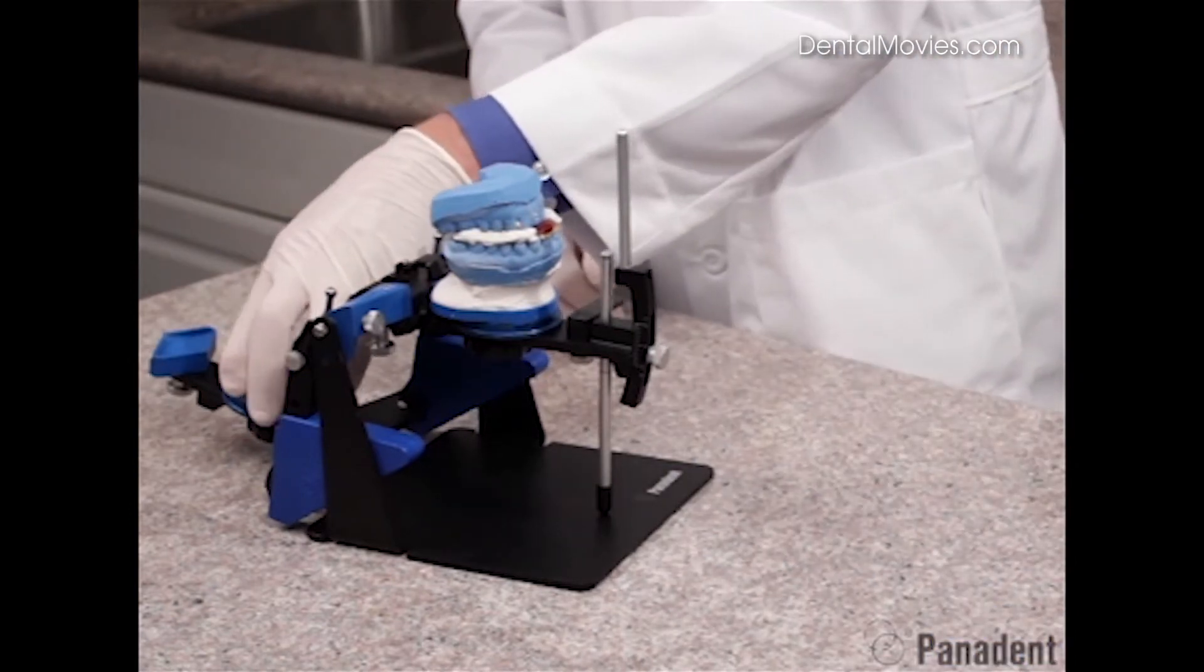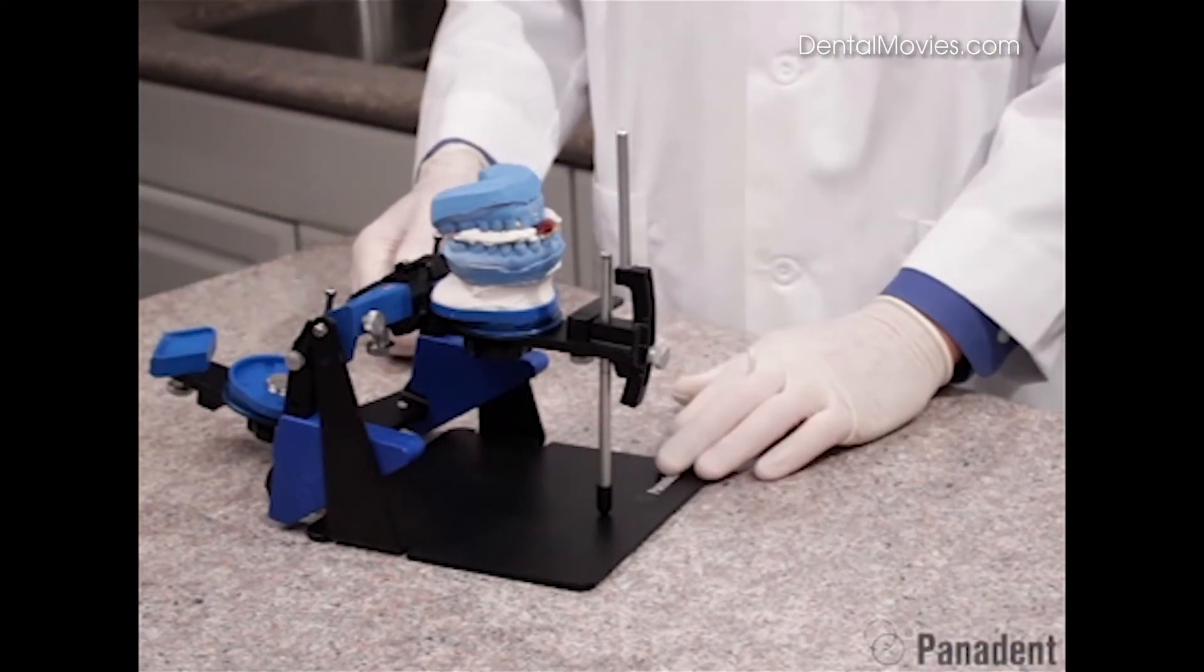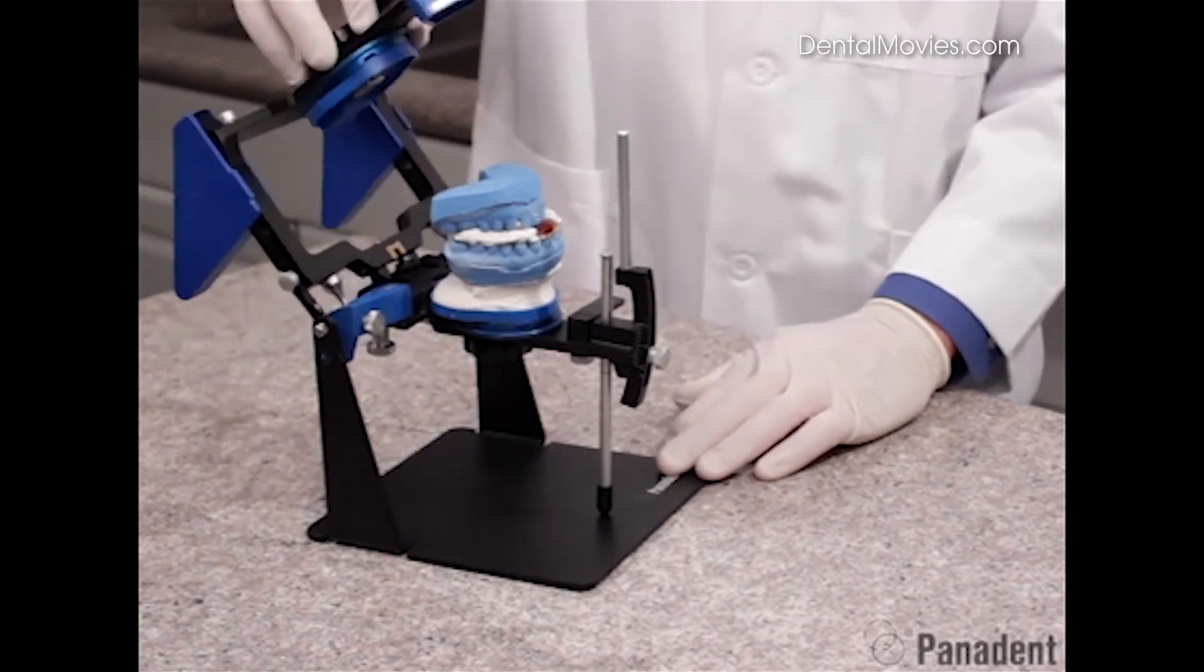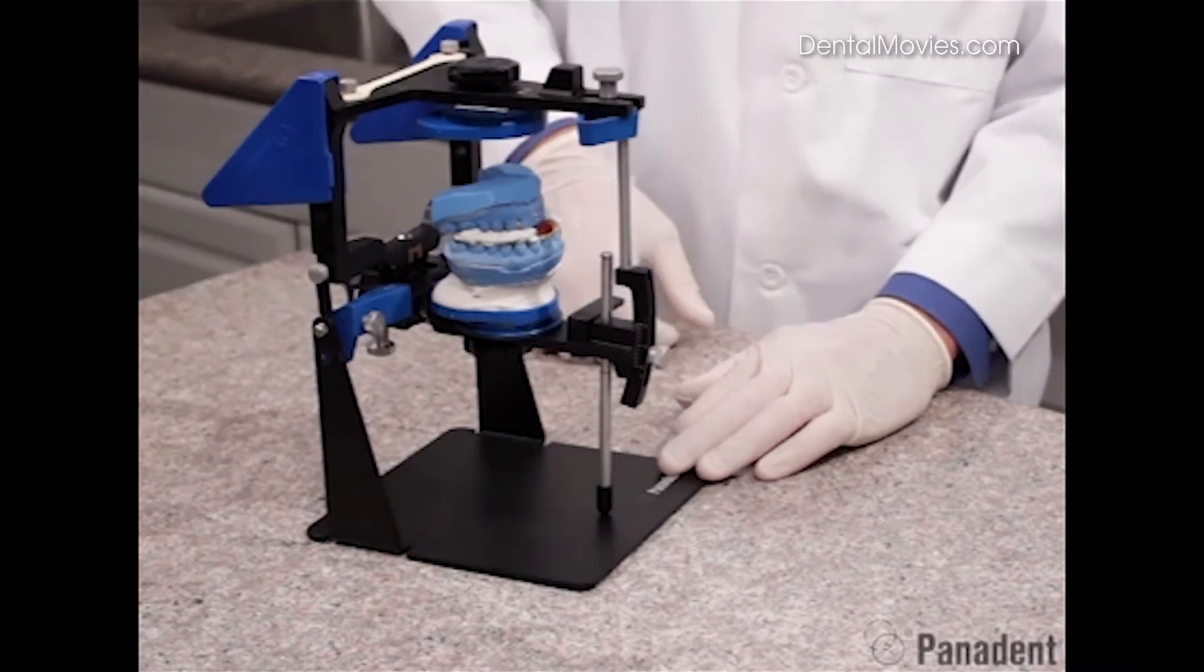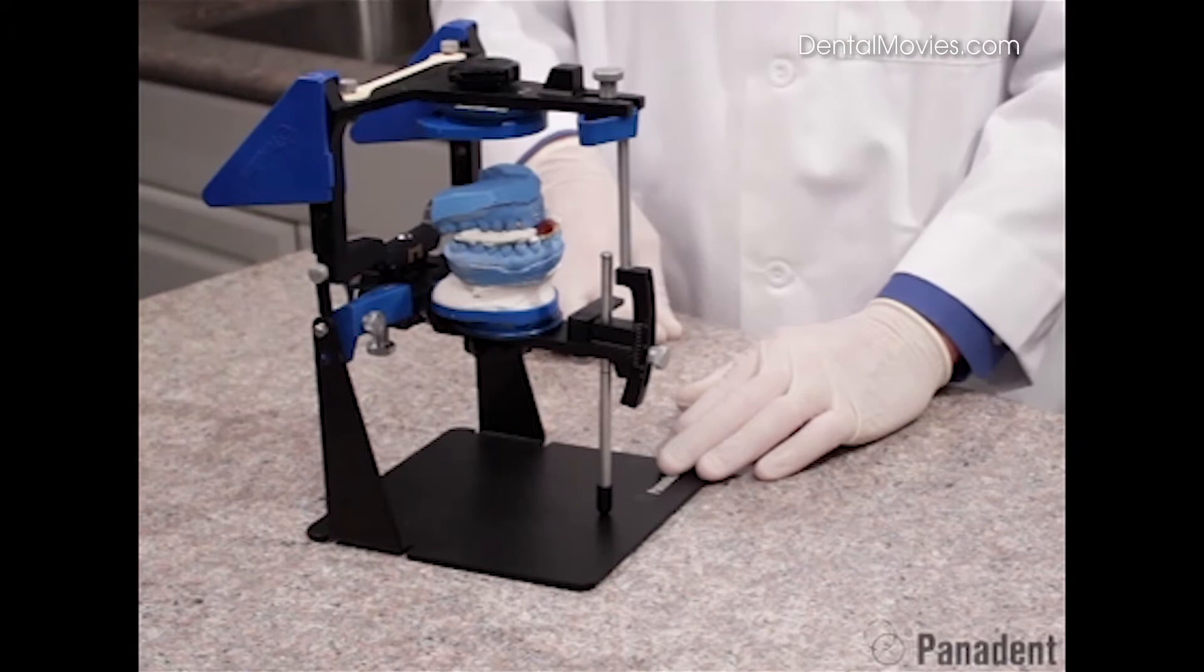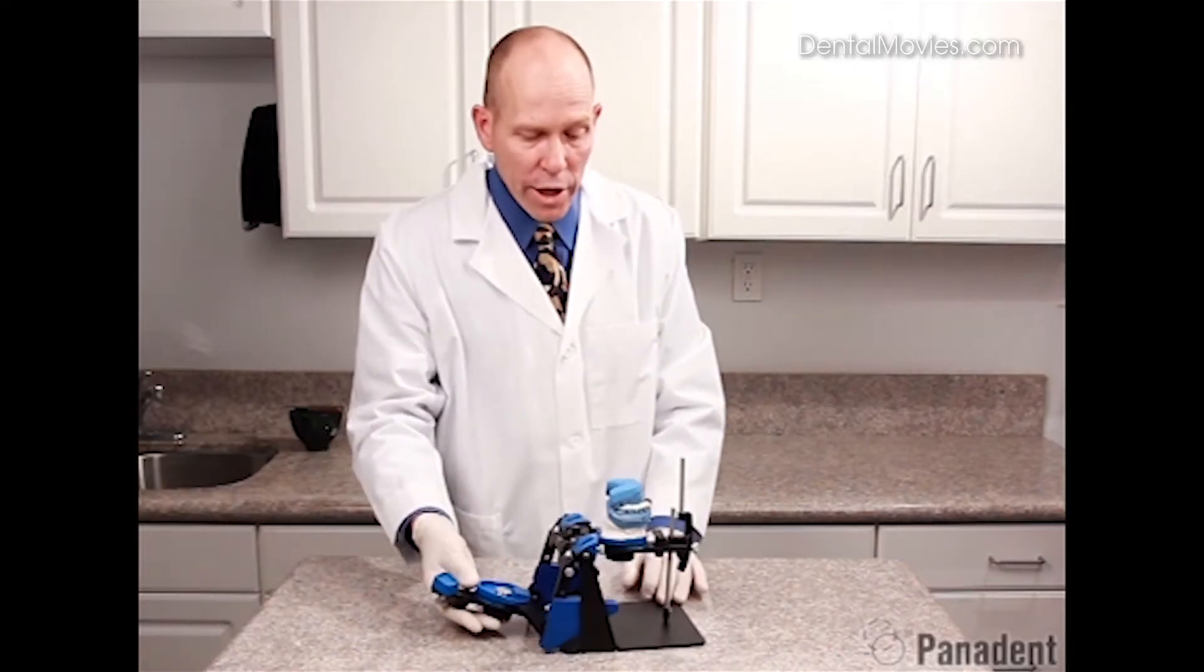We can then add a mounting plate to our lower frame here. We can add some plaster to the mounting plate and to the cast, swinging this around making a connection of the lower cast to the lower frame of the articulator. So we'll go ahead and mix some plaster at this time.